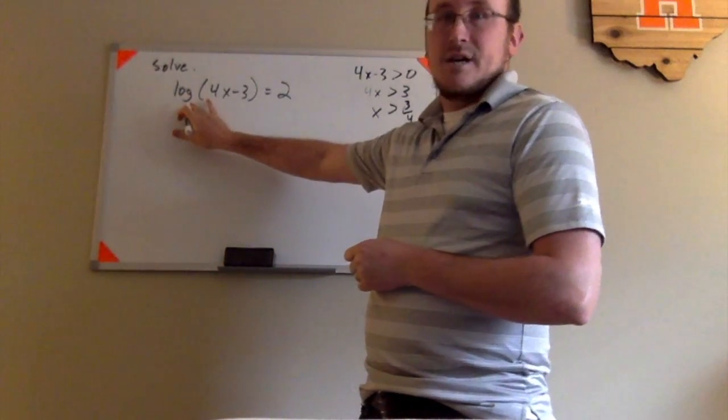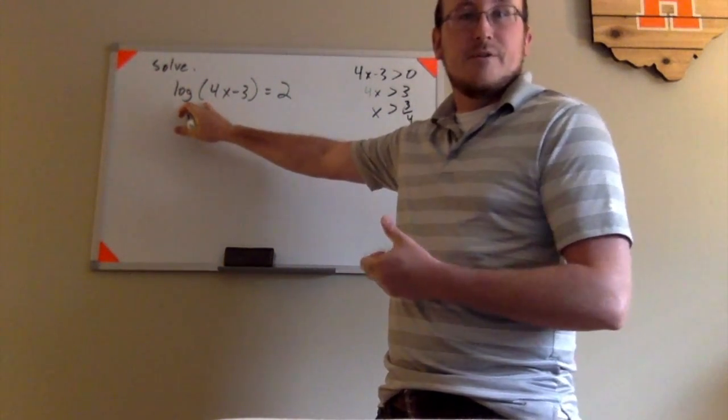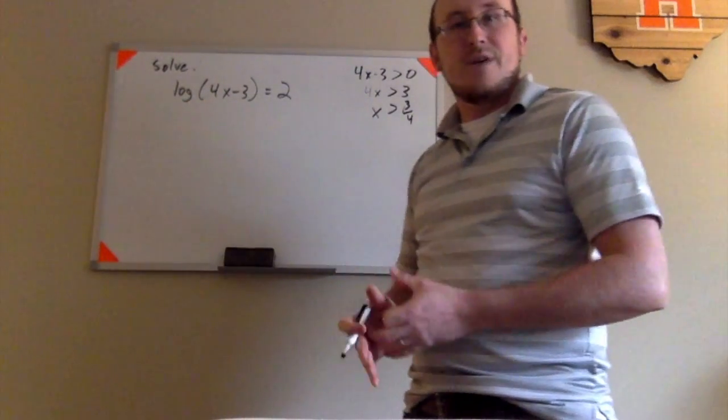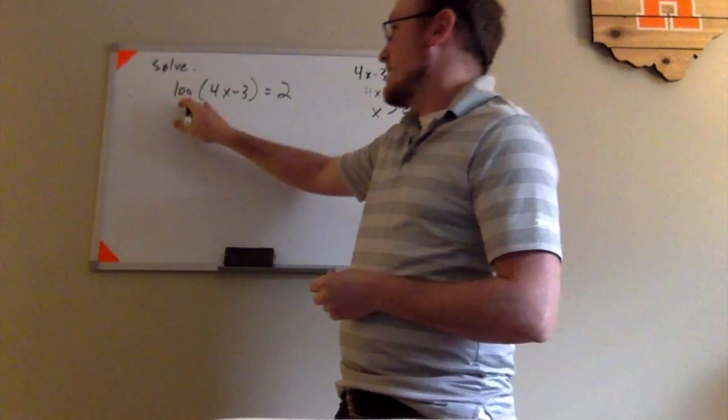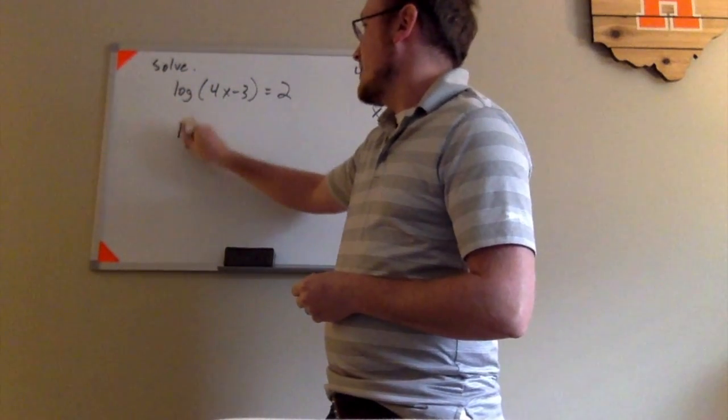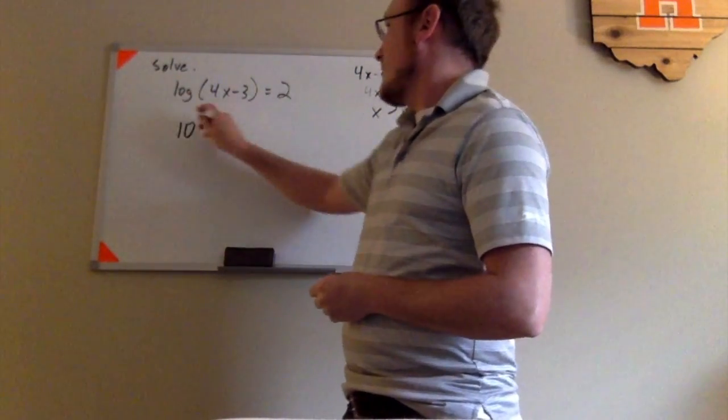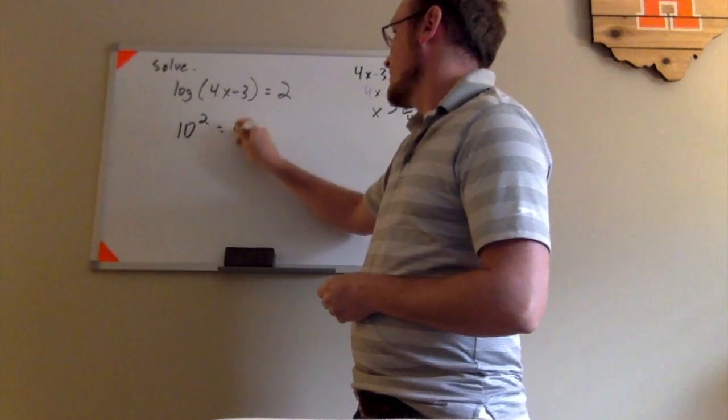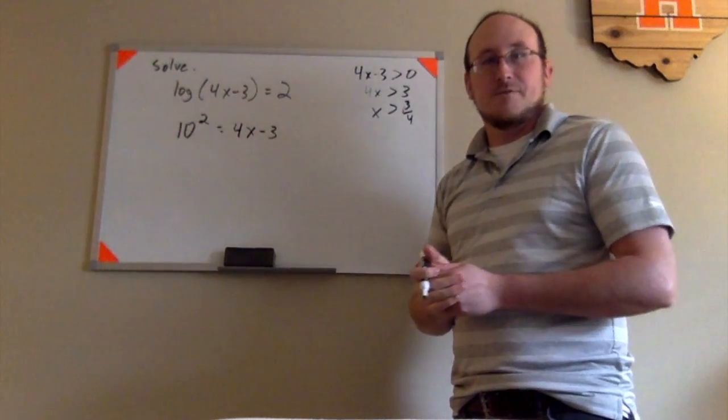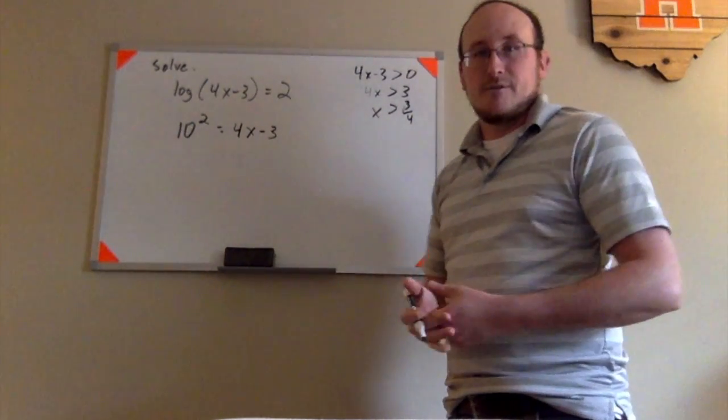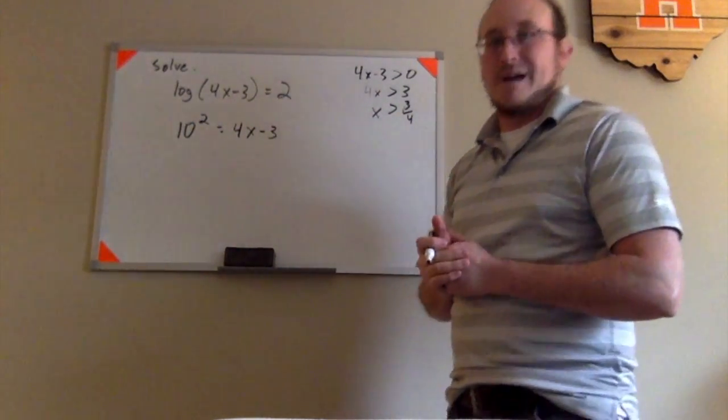Looking at this, I don't see a base written here, so that's the common logarithm of base 10. You need to know that, or else you don't know what base to use when you write your exponential. So the base is 10, so we say 10 to the second power equals 4x minus 3. I have other videos on how to convert between exponential and logarithmic form that you can refer back to if you need to.